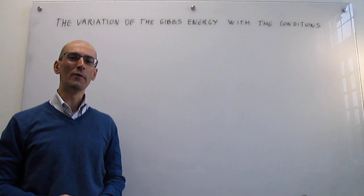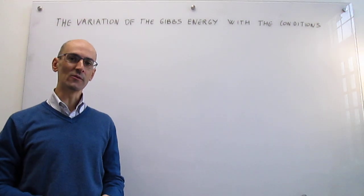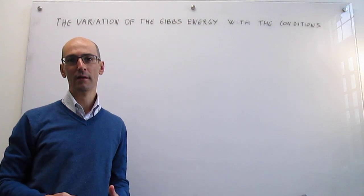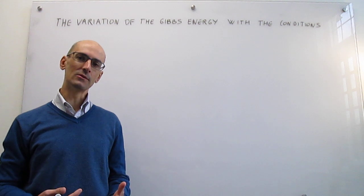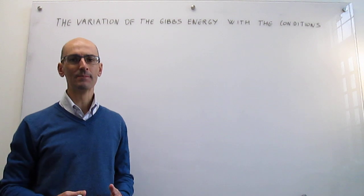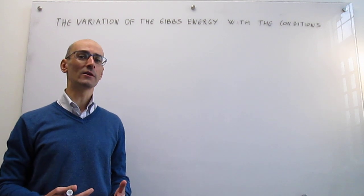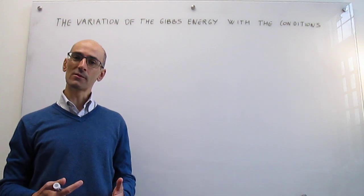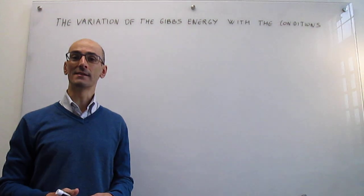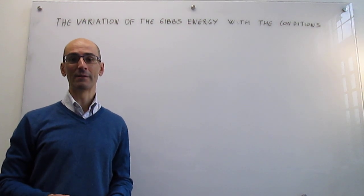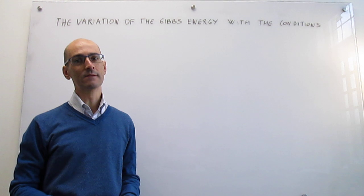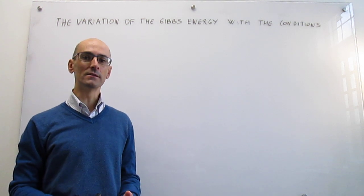In this video we develop how the Gibbs energy varies with the conditions. The Gibbs energy is a central thermodynamic variable because it allows you to establish the conditions for spontaneity and equilibrium in any process. Almost anything that we are going to do from now until the end of the semester is going to revolve around the Gibbs energy — it is truly a paramount thermodynamic variable in chemistry. The question we are trying to answer is: how does the Gibbs energy depend on the conditions?